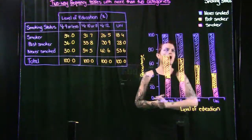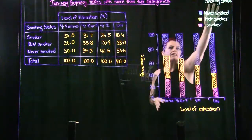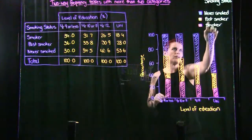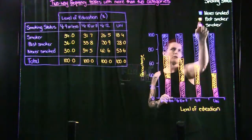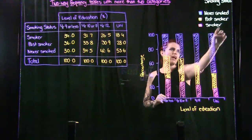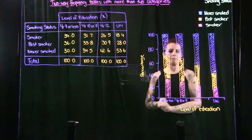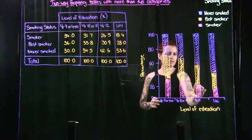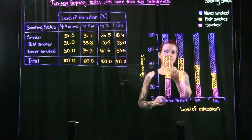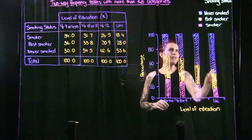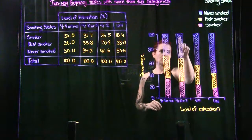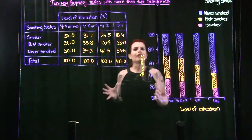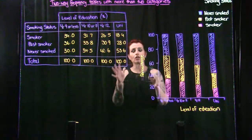Looking at the segmented bar graph, up here is our key: never smoked is in blue-purple, past smoker is in orange, and smoker is in pink. Smoker is at the bottom, past smoker in the center, and never smoked at the top.